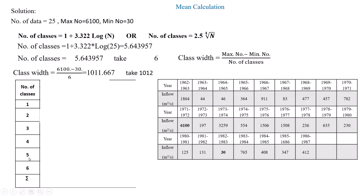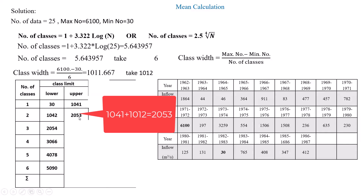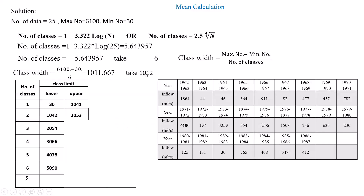Now let's set up the class limits for classes one through six. The first lower class limit is 30 (the minimum value). The second lower limit equals 30 + 1012 = 1042. The third lower limit equals 1042 + 1012 = 2054, and so on. The upper class limits are set to be just below the succeeding lower limit: the first upper limit is 30 + 1012 − 1 = 1041, the second is 2053, and so on.